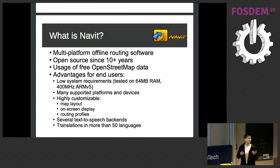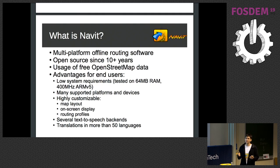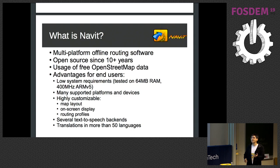NAVIT is also highly customizable. You can change how your map is drawn on the screen, change all the different screen elements, and define your own routing profiles. If you have any other requirement, we can also modify the code to fulfill specific needs. For text-to-speech, we support different backends depending on the platform — for example, on Android we use the standard Android TTS system, but we could also use Festival or Espeak.